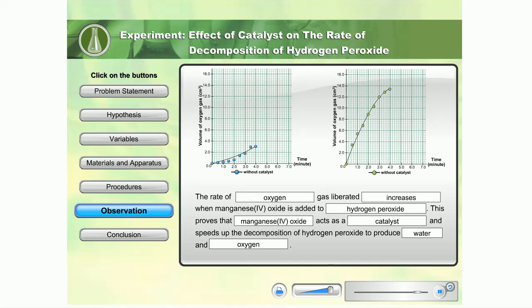The rate of oxygen gas liberated increases when manganese 4 oxide is added to hydrogen peroxide. This proves that manganese 4 oxide acts as a catalyst and speeds up the decomposition of hydrogen peroxide to produce water and oxygen gas.